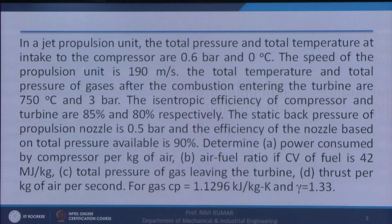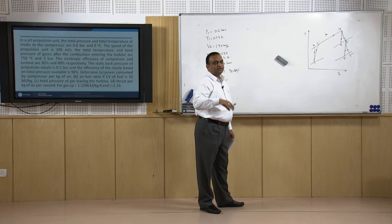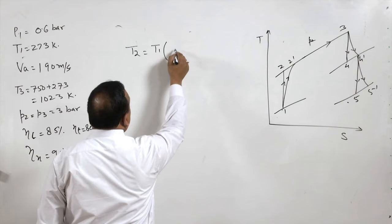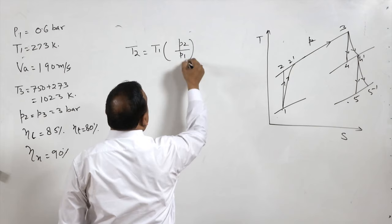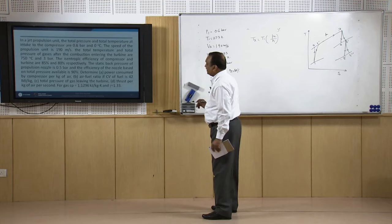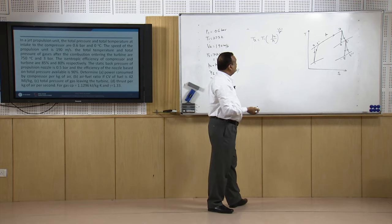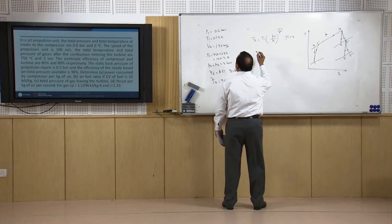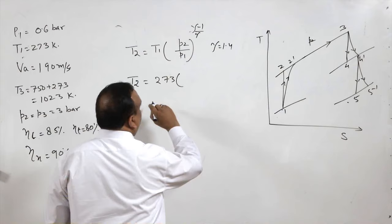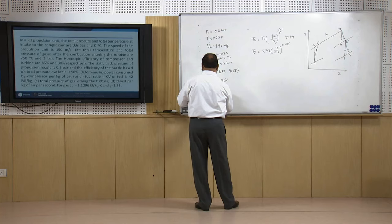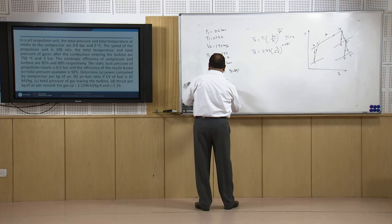Determine power consumed by the compressor per kg of air. Assuming 1 kg/s of air circulated, we first calculate T_2. Using isentropic compression: T_2 = T_1 × (P_2/P_1)^((γ−1)/γ) = 273 × (3/0.6)^0.286, giving T_2 = 432.6 K.